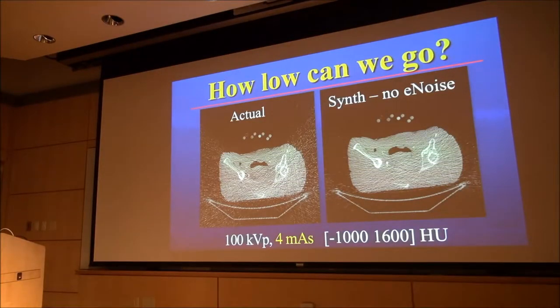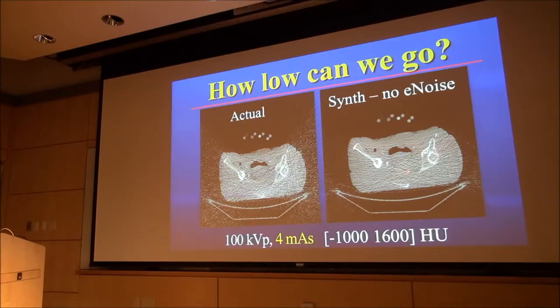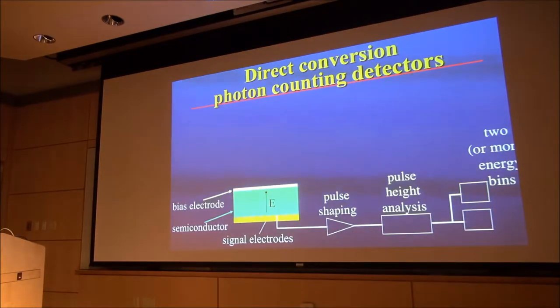Here's a demonstration. This is an actual scan of a cadaver at four MAS, very low technique, thin slice. This is what the image should have looked like if it was limited only by quantum noise. We scanned it at a high dose and predicted what the noise should look like when we reduced the dose. Big difference and all of that is coming from electronic noise.